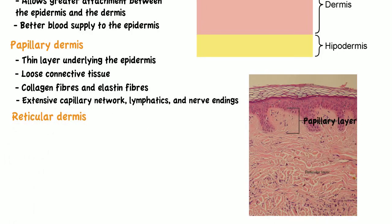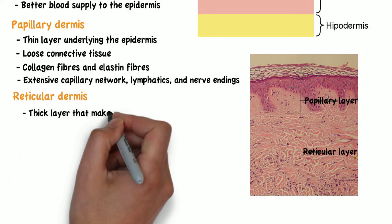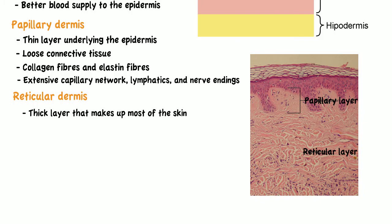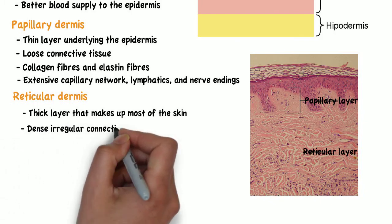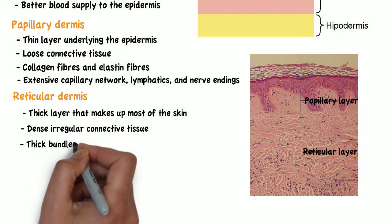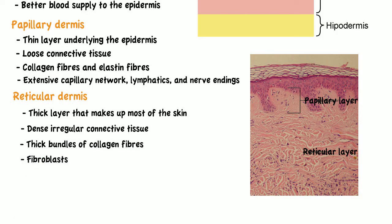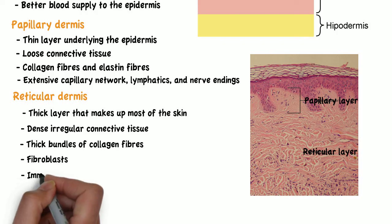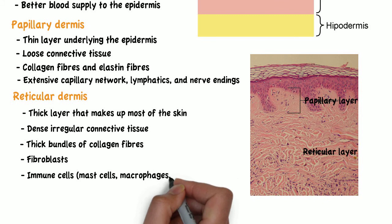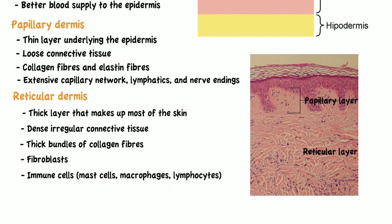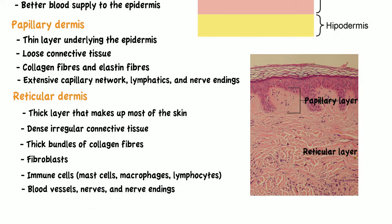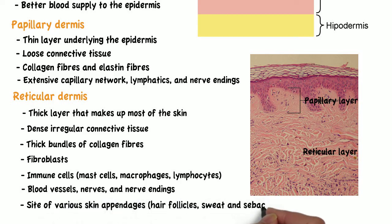The reticular dermis is a thick layer that makes up most of the skin overall. It is composed of dense irregular connective tissue containing thick bundles of collagen fibers. This layer contains fibroblasts — cells that synthesize collagen and elastin — as well as immune cells such as mast cells, macrophages, and lymphocytes, plus various vessels, nerves, and nerve endings. The reticular dermis is also the site of various skin appendages like hair follicles and sweat and sebaceous glands.